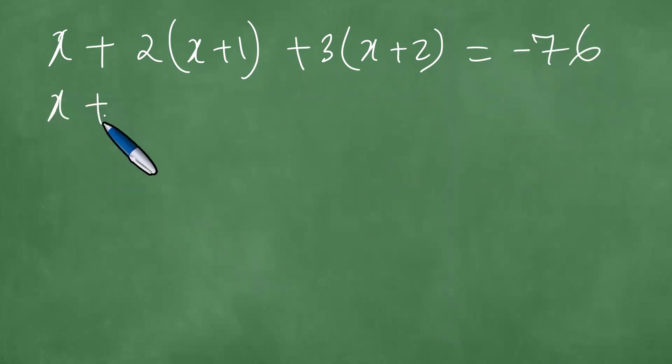Dealing with these, you have x plus 2x plus 2 plus 3x plus 6 equals minus 76.